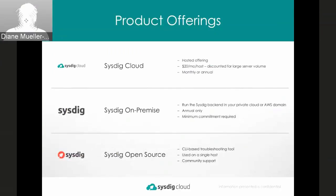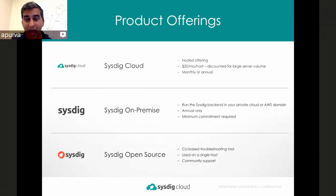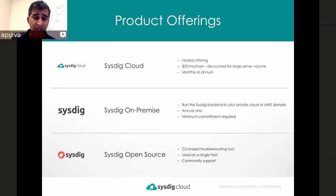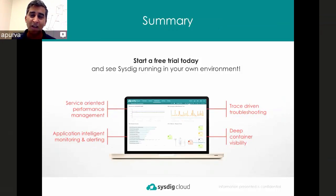Very quickly in terms of wrap-up: we exist because we love tech, but we also need to make money along the way. Sysdig Cloud is our hosted offering — individual host all the way up to thousands of hosts, monthly or annual. Sysdig On-Premise is the same product but you run it in your environment, annual only with a minimum commitment. And Sysdig Open Source — we love troubleshooting Linux systems, and that's what sysdig.org is all about. We also love free trials — come to our website, we'll give you a free trial to see this core functionality from viewing microservices all the way down to deep container visibility.